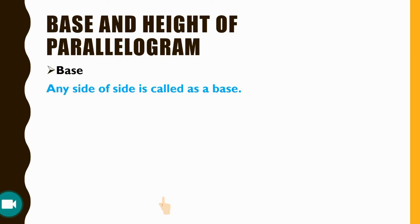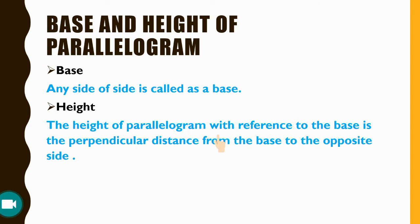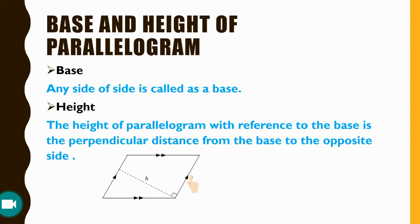Next is the base and height of a parallelogram. The base is any side of the parallelogram. The height is the perpendicular distance from the base to the opposite side — meaning the straight-line distance between the base and its opposite side is the height of the parallelogram.